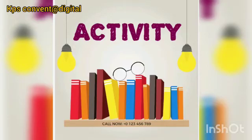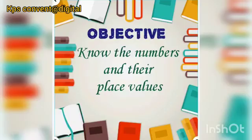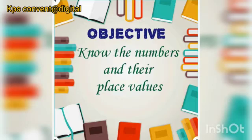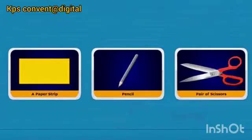This activity is related to part 1 of the chapter Knowing Our Numbers. Our objective of this activity is to know the numbers and their place values. For this activity, we require materials like a paper, a pencil, and a pair of scissors.